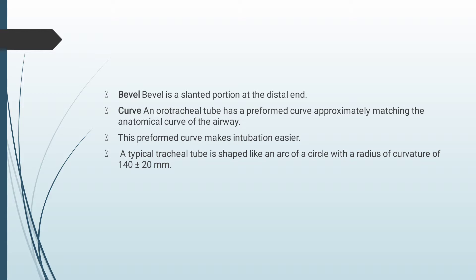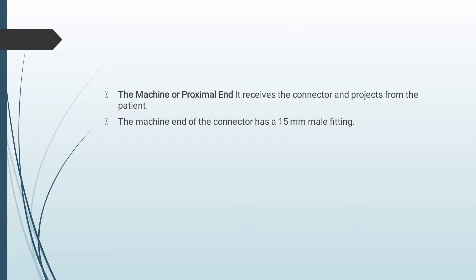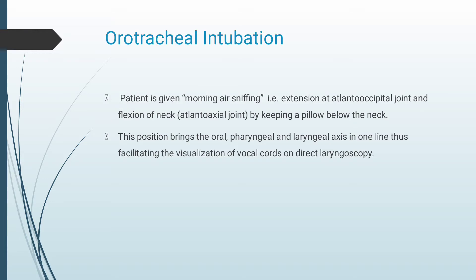A typical tracheal tube is shaped like an arc of a circle with a radius of curvature of 140 ± 20 mm. The machine end or proximal end receives the connector and projects from the patient, with a 15 mm male fitting. While doing orotracheal intubation, the patient is given the morning-air sniffing position — extension at the atlanto-occipital joint and flexion at the atlanto-axial joint by keeping a pillow below the neck. This position brings the oral, pharyngeal, and laryngeal airway in one line, facilitating visualization of the vocal cords on direct laryngoscopy.